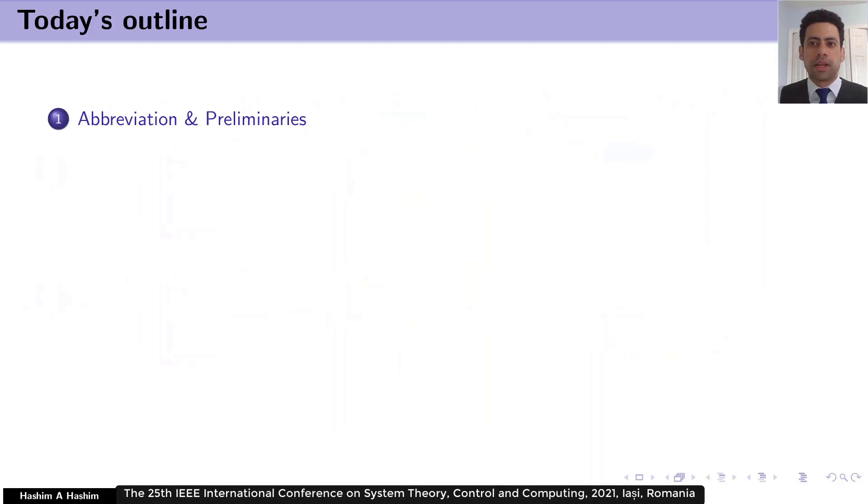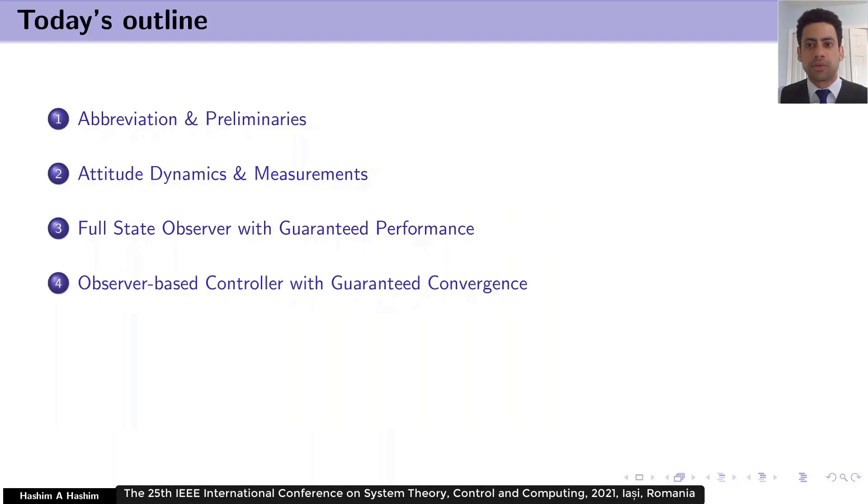Today's outline includes abbreviation and the preliminaries of all math notation. Next, I will present the true attitude dynamics and the available measurements, followed by the presentation of the full state observer with guaranteed performance. Next, we will go to the observer-based controller with guaranteed conversions. Next, we will look at the numerical results, and I will finish off with concluding remarks.